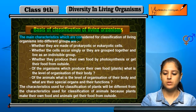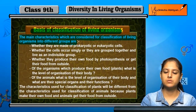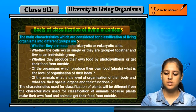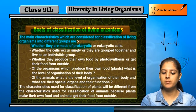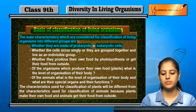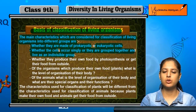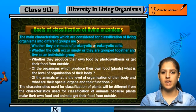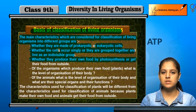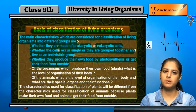The main characteristics considered for classification of living organisms into different groups include: first, the type of cells — whether they are prokaryotic or eukaryotic; second, whether the cells occur singly or grouped together — that is, unicellular or multicellular; and third, whether they produce their own food by photosynthesis or get food from outside — that is, autotrophic or heterotrophic.